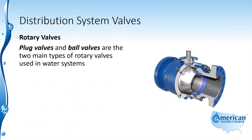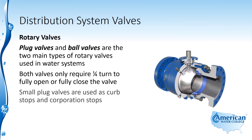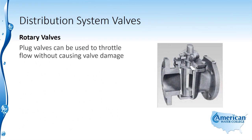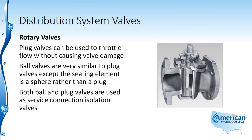Plug valves and ball valves are the two main types of rotary valves used in water systems. Both valves require only one quarter turn to fully open or fully close the valve. Small plug valves are used as curb stops and corporation stops, while large plug valves are used in high pressure applications such as high lift pump discharges. Plug valves can be used to throttle flow without causing valve damage. Ball valves are very similar to plug valves except the seating element is a sphere rather than a plug. Both ball and plug valves are used as service connection isolation valves.